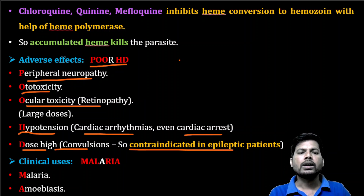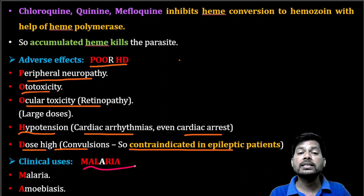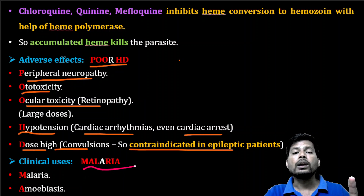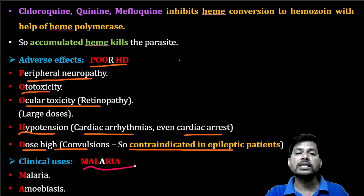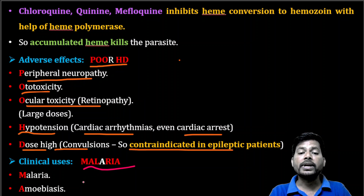Next are the clinical applications. The trick for clinical uses is 'MALARIA.' The word malaria generally means 'bad air.' Chloroquine and some drugs like quinine and mefloquine inhibit the enzyme heme polymerase. This inhibition increases heme concentration, which is toxic to the malarial parasite and kills it.